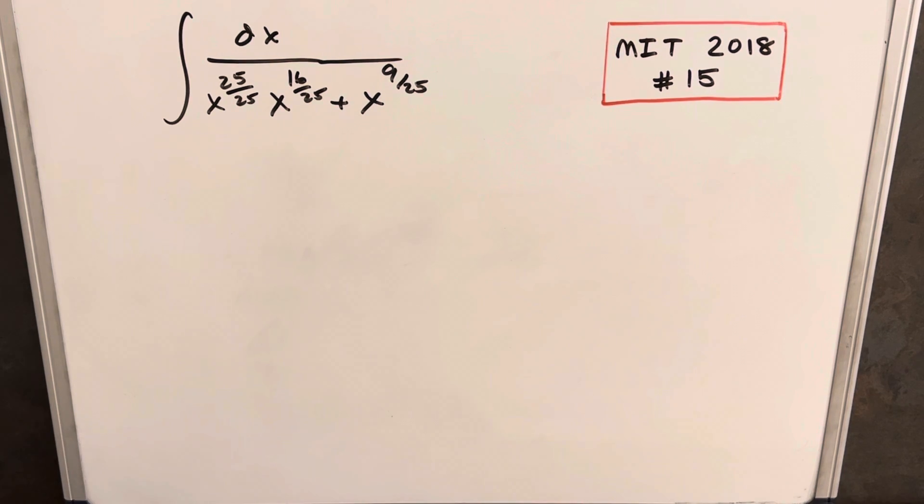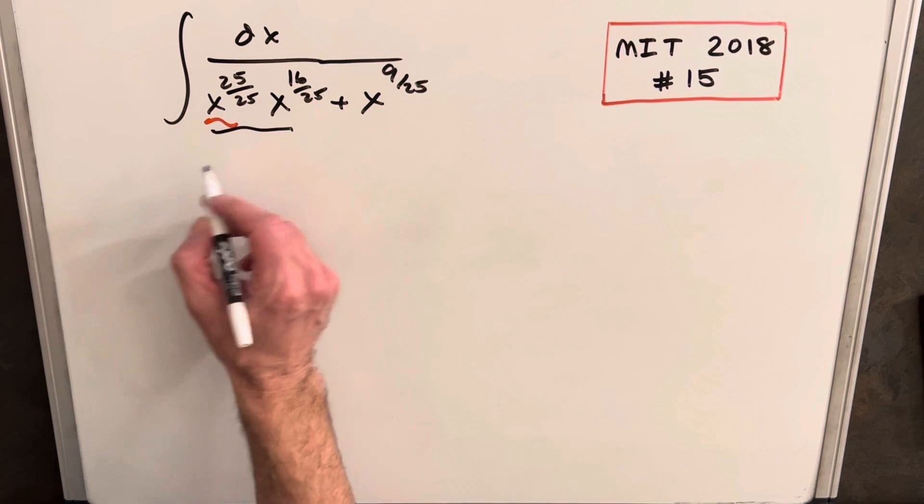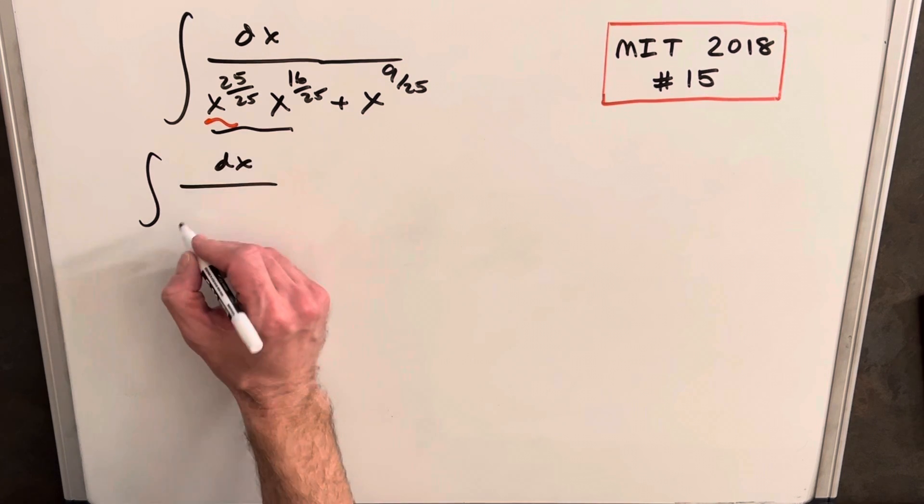The first thing that's really weird here is that they give us x to the 25 over 25 when we know that's just one. I think they're trying to give us a hint, but we can actually just multiply this together. I think I'm just going to dismiss that and write this a different way.